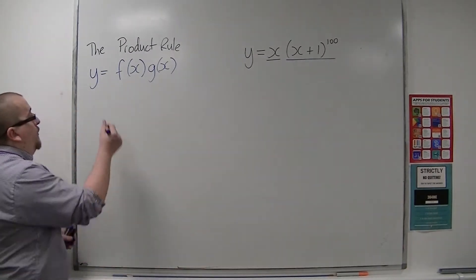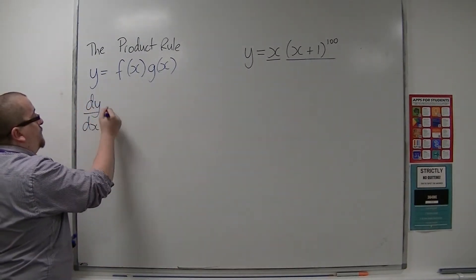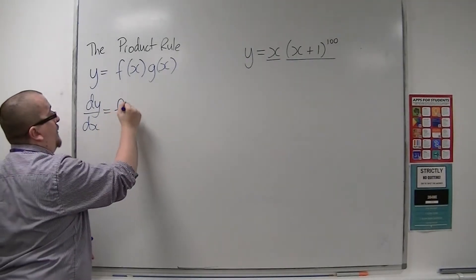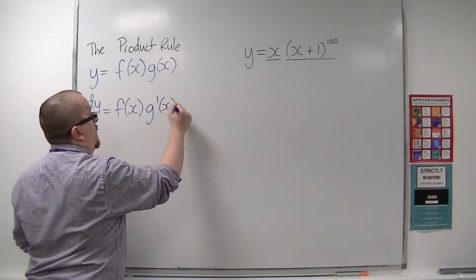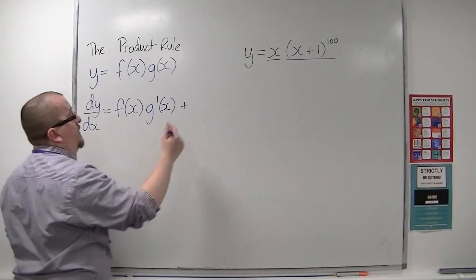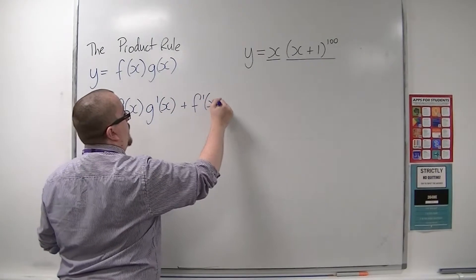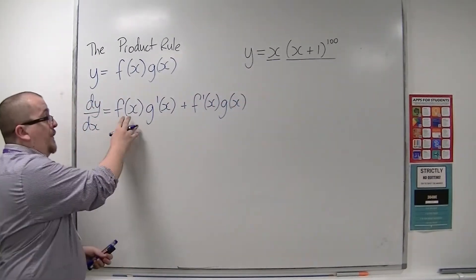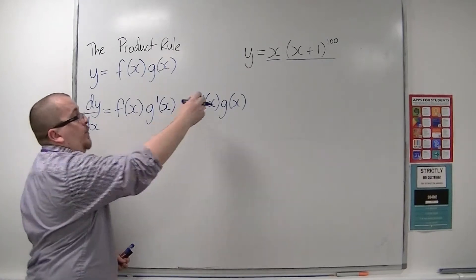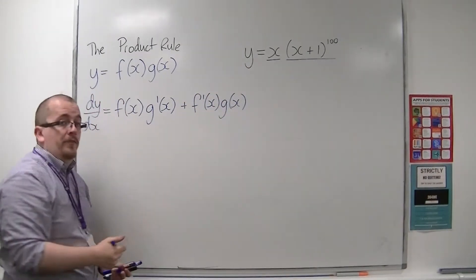And the product rule says that dy by dx is equal to the first times the derivative of the second plus the second times the derivative of the first. So the first times the derivative of the second plus the second times the derivative of the first.